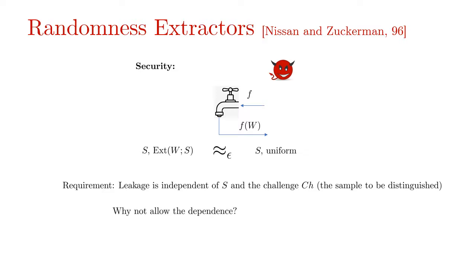Why not allow the dependence? Because the leakage function could be such that it takes in W, S and the challenge and checks if the challenge equals the extractor output or not helping to distinguish with very high probability. So is this the end of the story?